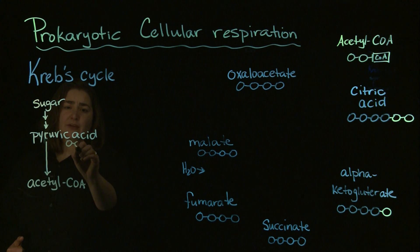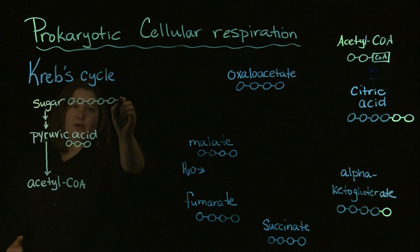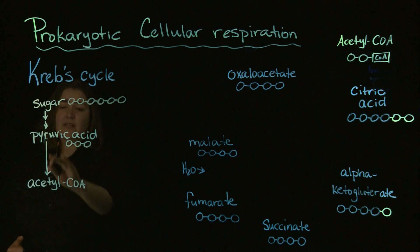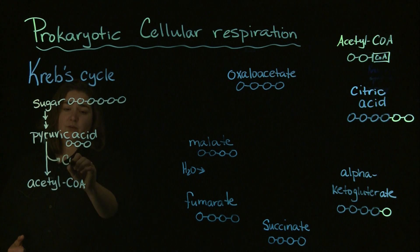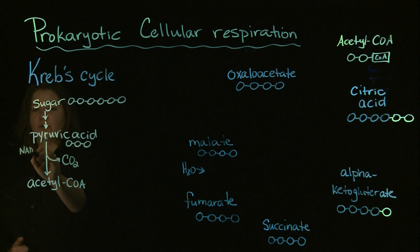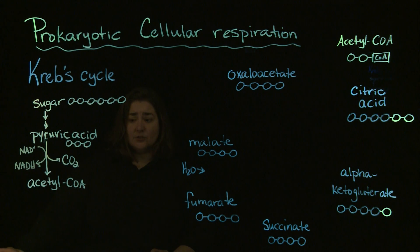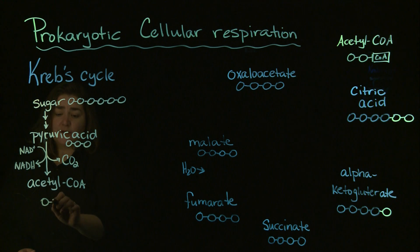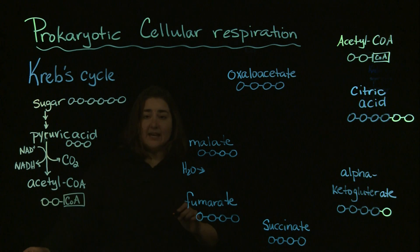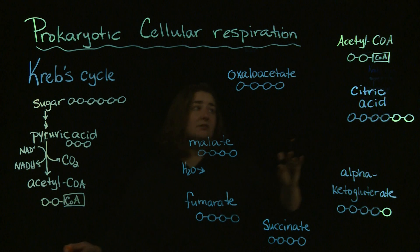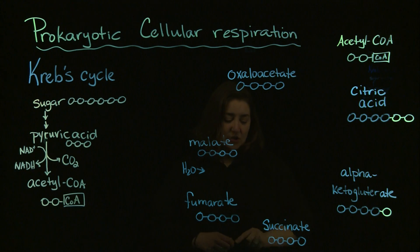Remember our pyruvic acid was our 3-carbon molecule and our sugar was our 6-carbon molecule. With that conversion of pyruvic acid into acetyl-CoA, this is going to be where we generate some of our carbon dioxide. We are also going to generate some NADH — those electrons we need to fuel the electron transport chain — and we are going to be left with a 2-carbon molecule with the coenzyme A attached to it. That acetyl-CoA is what we need to start our Krebs cycle.